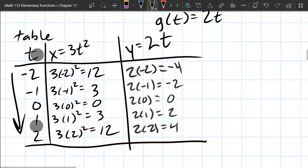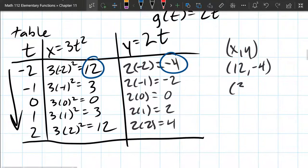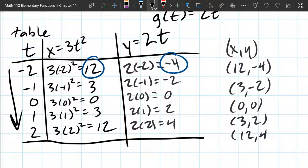I'm going to write down points here. The first point I'm going to write down is the first entry in the table. So these points are going to be x, y values. So our first one is (12, -4). And then we have (3, -2), (0, 0), (3, 2), and (12, 4).